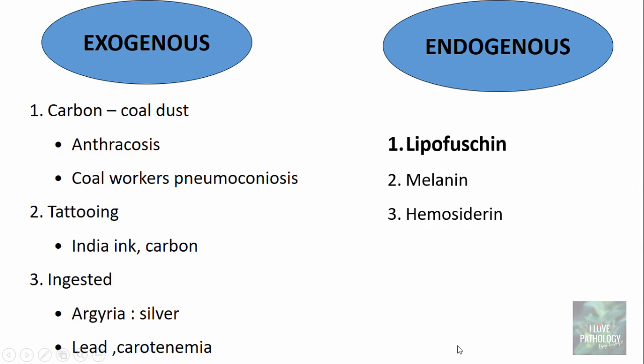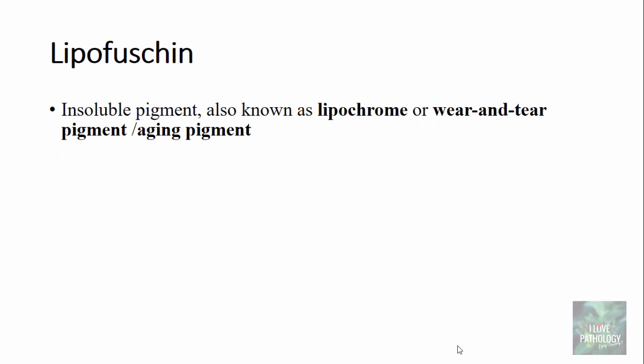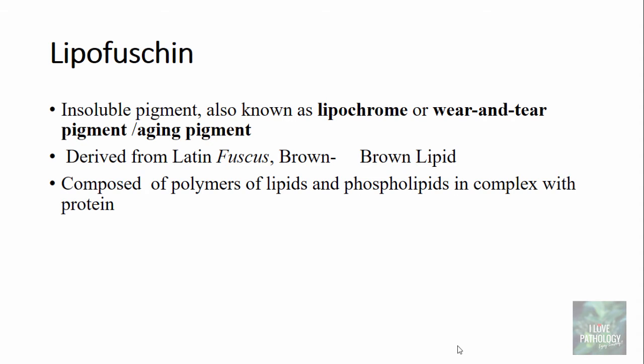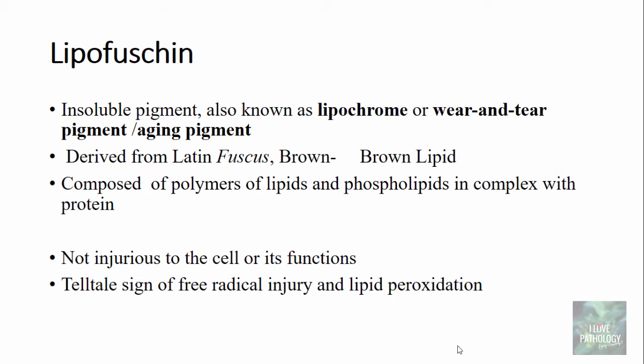Coming to the endogenous pigments — lipofuscin, melanin, and hemosiderin. Lipofuscin is an endogenous insoluble pigment, also known as lipochrome or wear-and-tear pigment, otherwise referred to as aging pigment. The word lipofuscin is derived from the Latin fuscus, meaning brown, because the color of the pigment resembles brown — it is also referred to as brown lipid. It is basically composed of polymers of lipids and phospholipids in complex with protein. The presence of lipofuscin is not injurious to the cell, but is evidence of free radical injury and lipid oxidation.